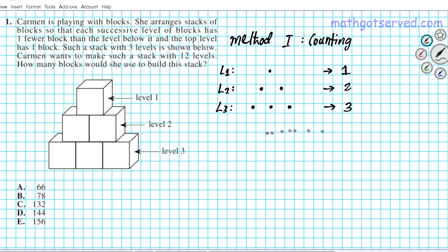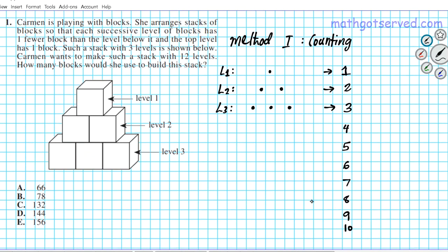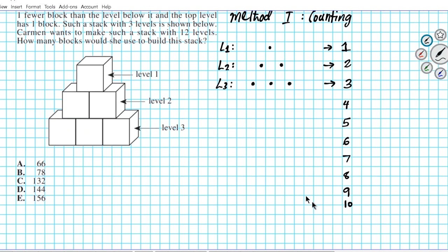If we follow the pattern all the way down to level 12, what do you expect there to be? You're going to have one, two, three, you have four, five, six, seven, eight, nine, 10, 11, 12. So that would be the number of blocks you have for the respective levels, 11 and 12.